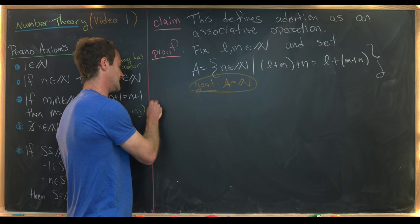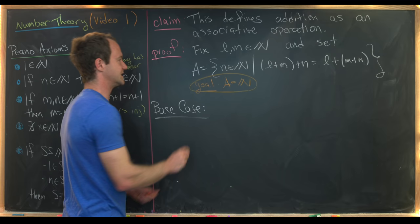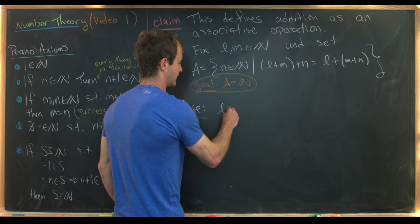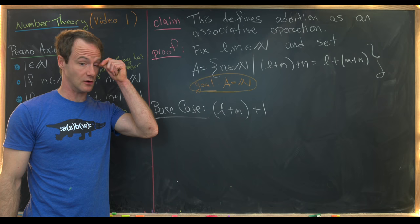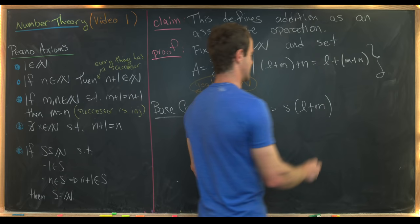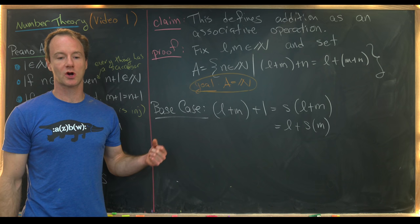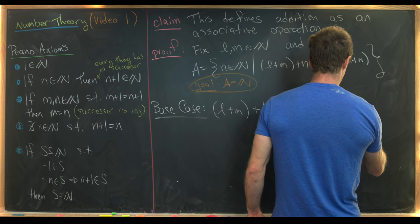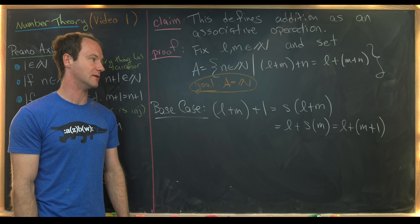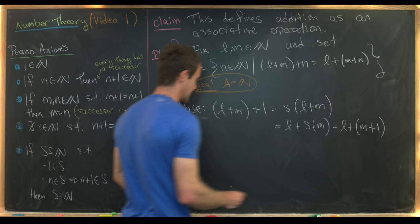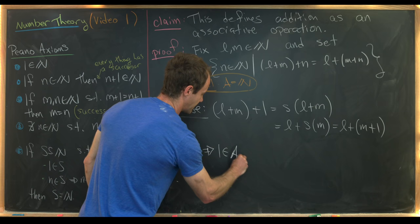For the base case, we determine if one is in A. We've got L plus (M plus one). That equals the successor of L plus M by the definition of the successor. That equals L plus the successor of M by our recursive definition for addition. That equals L plus (M plus one), where we expand the successor of M into M plus one. This shows that one satisfies the equation, so one is an element of A.